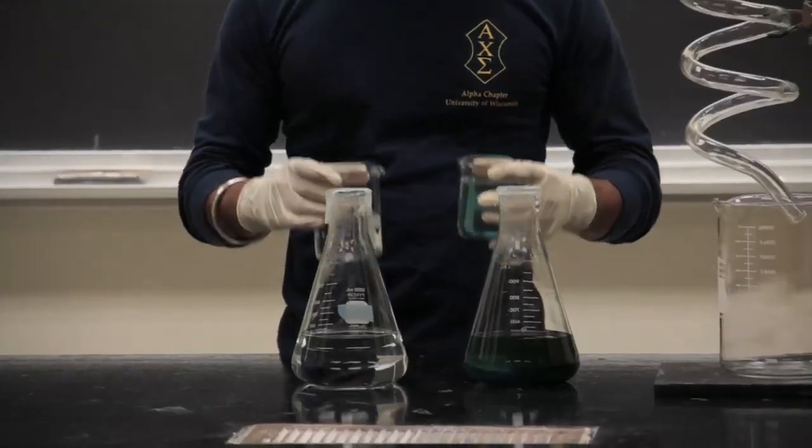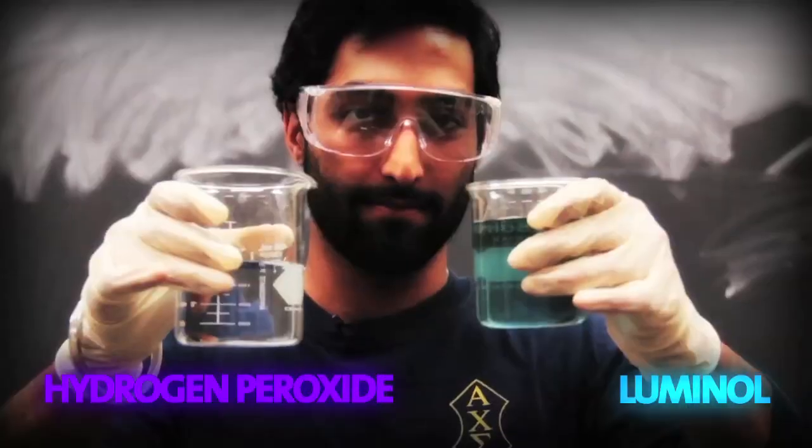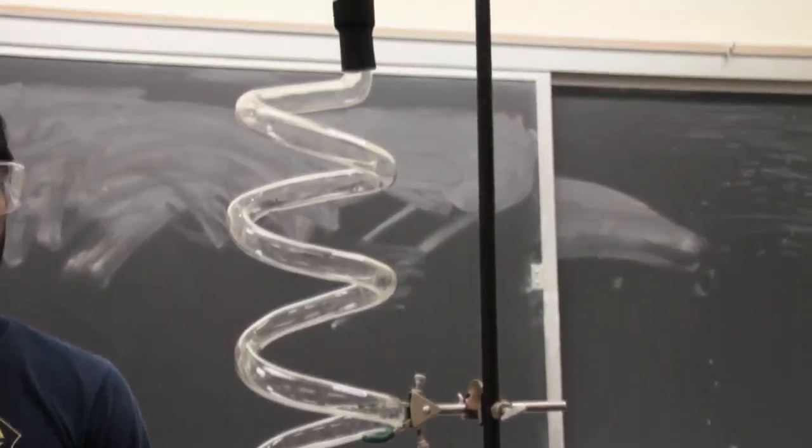That's what we're going to do here. So what I'm going to do is I'm going to take these two chemicals, Luminol and hydrogen peroxide, pour them into this cylindrical little spiral spout here and we'll see a nice glow effect happen.